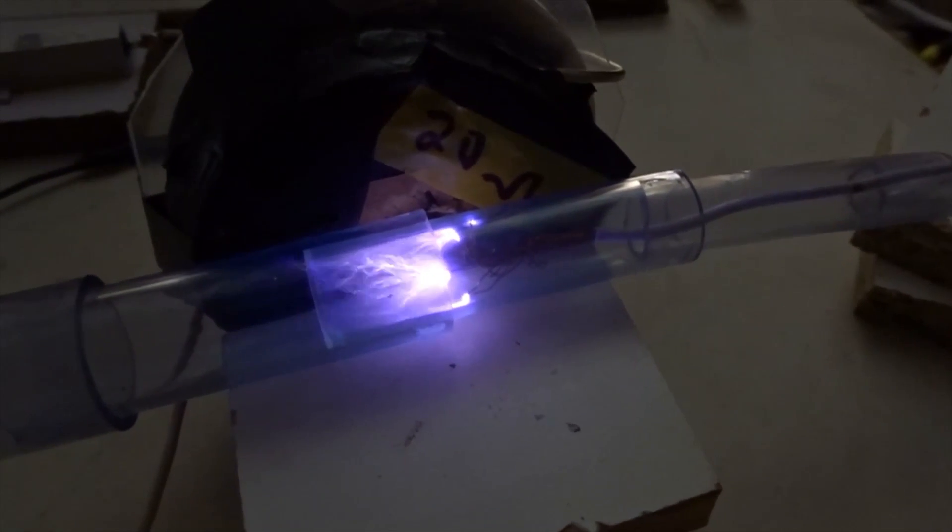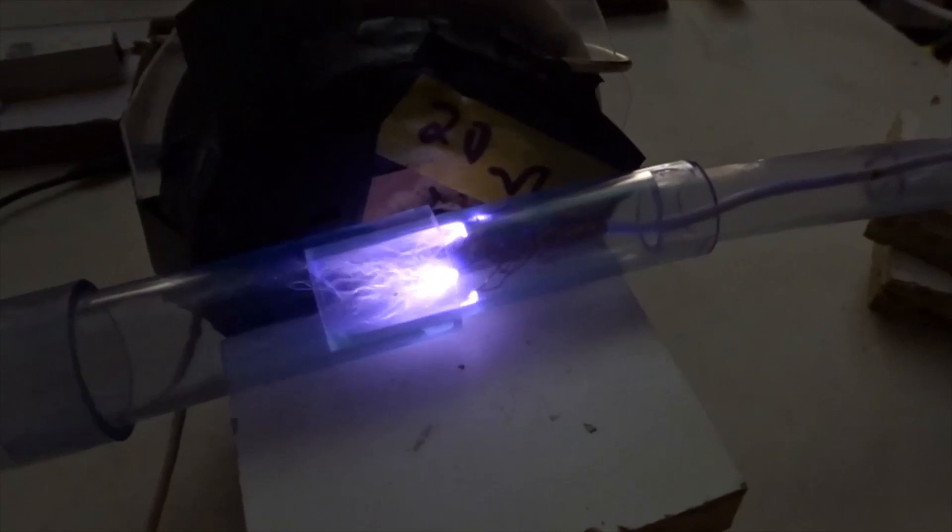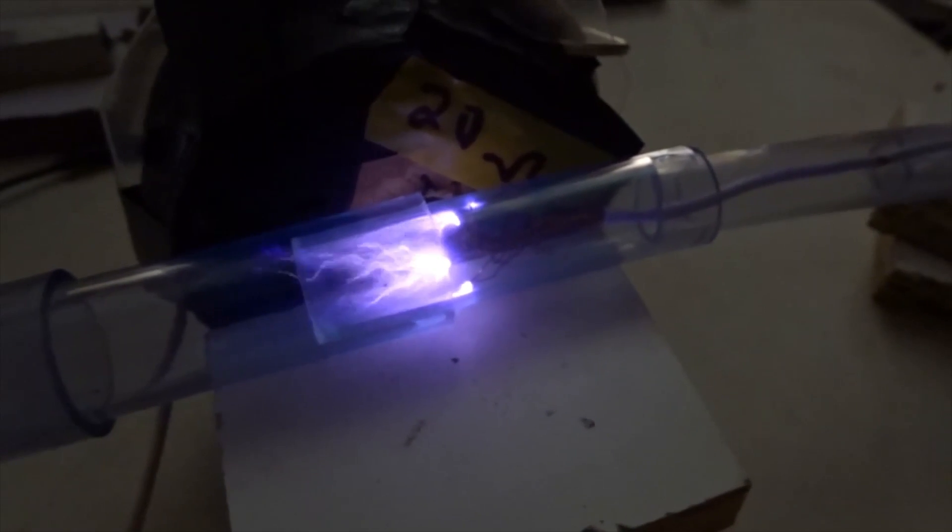Next, when we provide Tesla coil energy to that copper wire coil by the aluminum plate and a path to ground, you get a huge increase of ionization. The aluminum plate shuts off ionization when the copper wire is turned off, and then when it gets a path to ground, ionization turns on again.